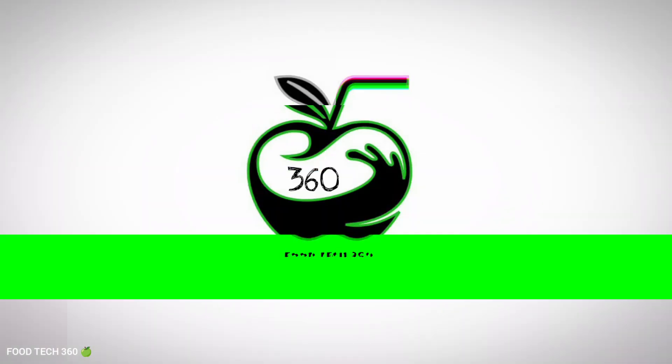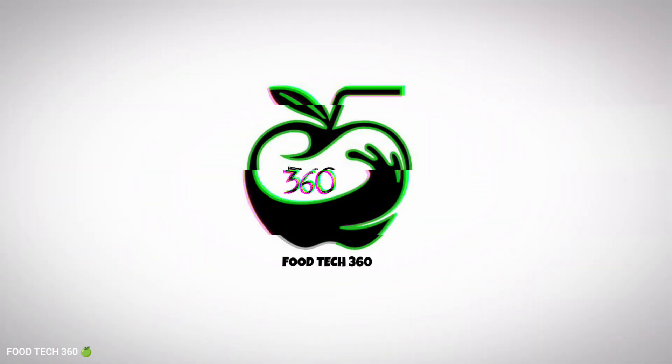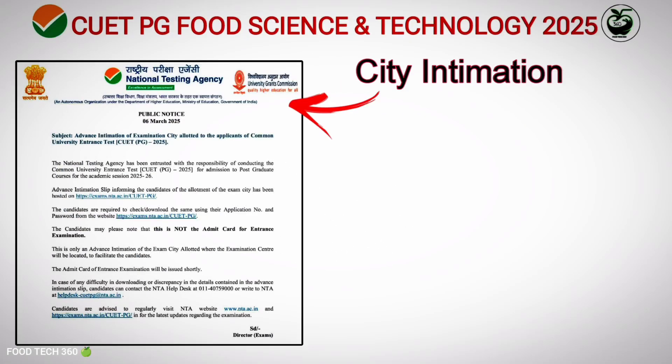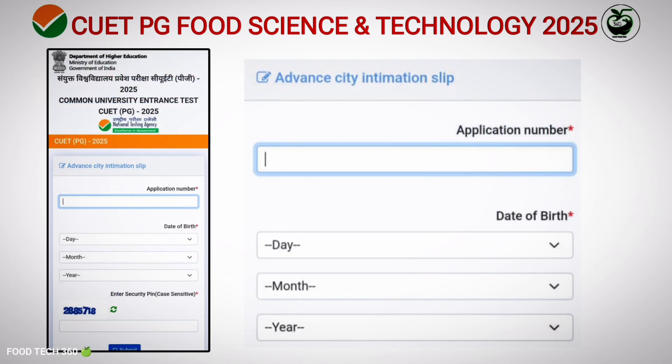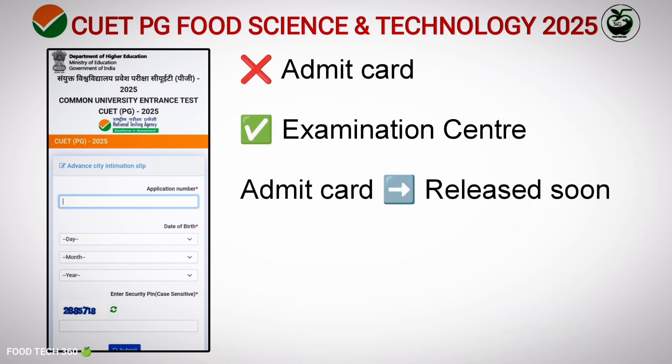Hello friends, welcome back to our channel ForTech 360. The advanced intimation slip informing candidates of the allotment of the exam city has been opened on the NTA website for candidates appearing for various entrance exams under CUET-PG. Candidates are required to visit the NTA website and login to the portal using their application number and date of birth. This is not the admit card for the entrance exam — this is only an advanced intimation of the exam city allotted.